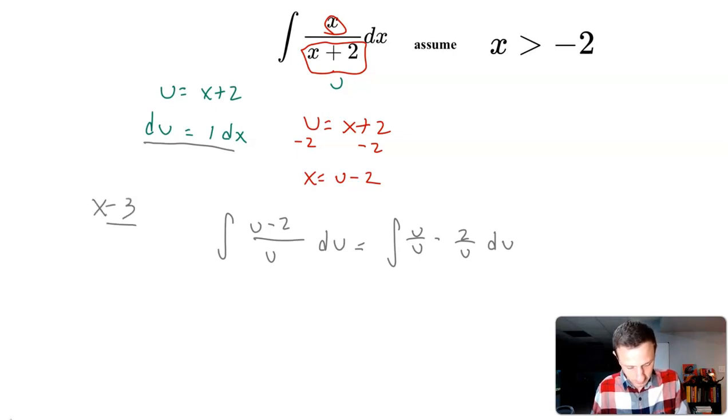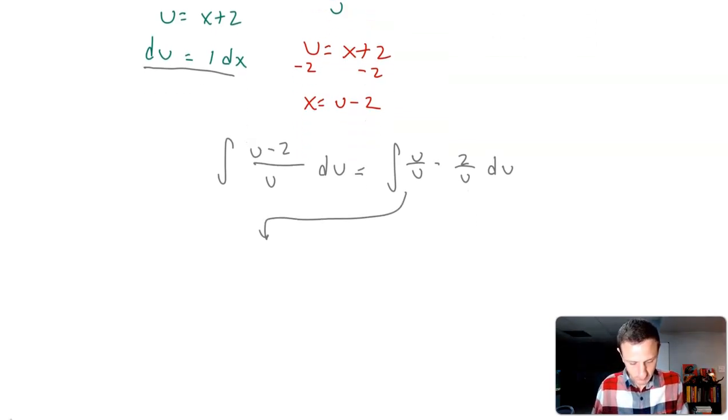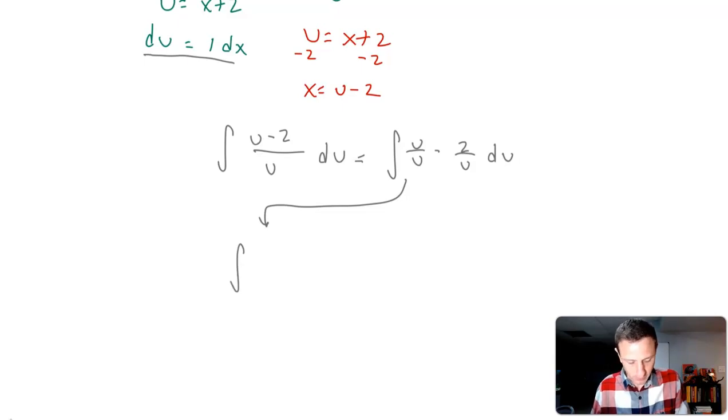If you had like x minus 3 over x, you could write it as x over x minus 3 over x, just like that. Same idea, not doing anything fancy there. So then u over u is 1 minus 2 over u du.